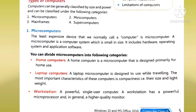Next is workstation. A workstation is a powerful single-user computer with a powerful microprocessor and generally a higher quality monitor. The Unix operating system is also known as a workstation system. Workstations are used in business — for example, engineers use them to create graphics and architects use them for design. The microprocessor is powerful and the speed is more powerful.